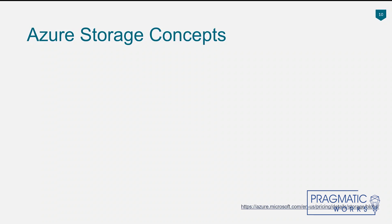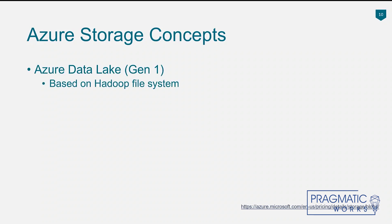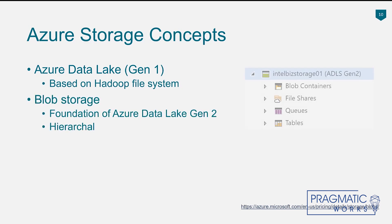Cloud storage is pretty cheap. Azure storage concepts start with Azure Data Lake Gen 1, which was actually based on the Hadoop file system. Going back a few years when big data was new, Microsoft chose to build their data lake technology on top of Hadoop, a distributed file system that allowed very efficient storage for text-based data. Moving forward, Azure Data Lake Gen 2 is based on blob storage, which is much more flexible and can be faster.